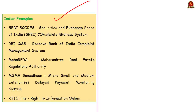I will read out the names of the ODR platforms for you: SEBI Scores, RBI CMS, MahaRERA, MSME Samadhan, and RTI Online. You may expect a prelims question regarding these — they will give the name of the ODR platform and you have to identify that it is an Online Dispute Resolution platform. So pause the video and go through all of these names.